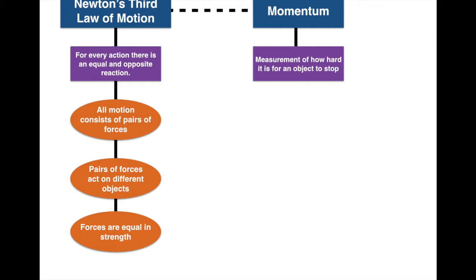Momentum is related to Newton's third law of motion, but also to Newton's first and second laws. Momentum is essentially a measurement of how hard it is for an object to stop. In our next section, we're going to talk about a law about momentum that has to do with its conservation — whether momentum is lost or gained at all.